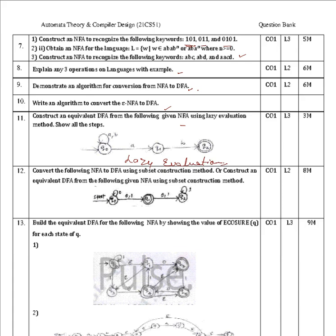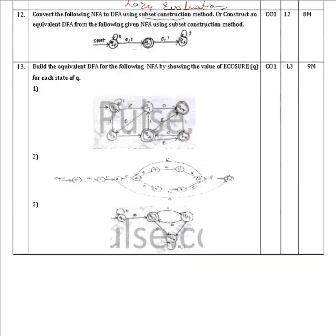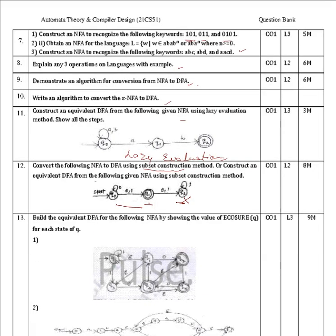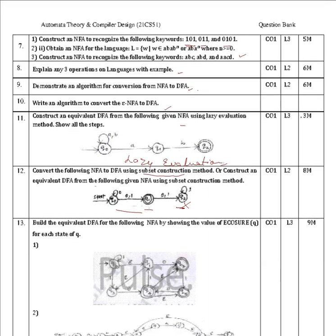Convert the following NFA to DFA using subset construction method. You must apply all possible subsets from Q0 to Q1 and design the DFA. Note that Q2 is not reachable — it is a dead state and must be removed — leaving only two states. This NFA-to-DFA problem will be for eight marks.